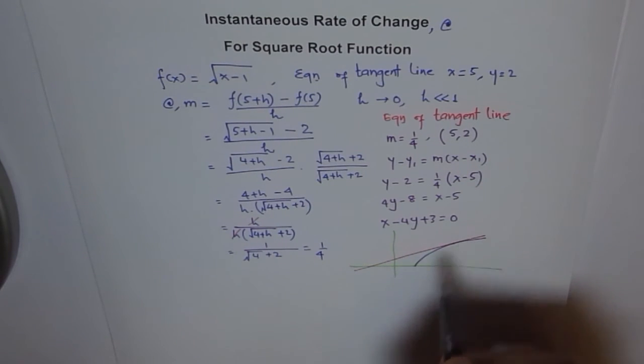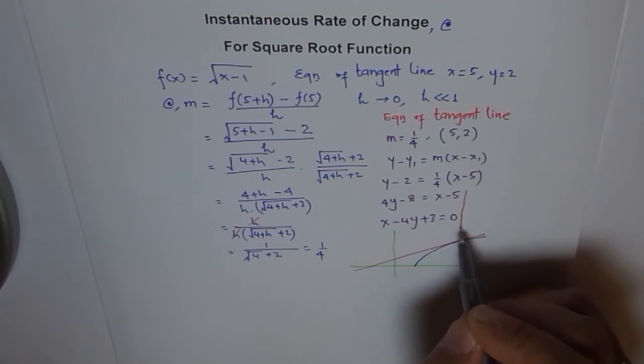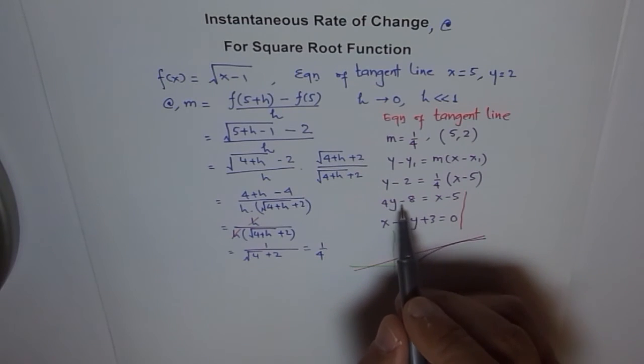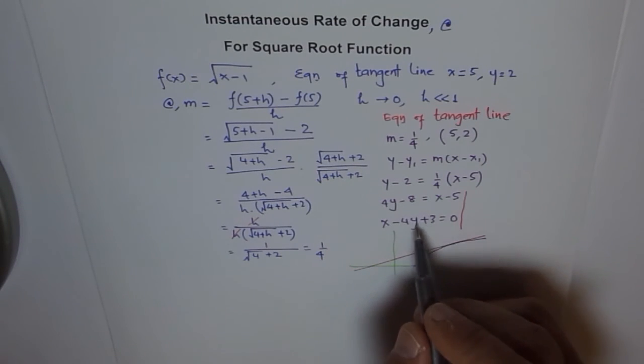And you're trying to find tangent at point 5. So let's assume that point 5 is here and y value is 2 for it. So the tangent will be something like that.